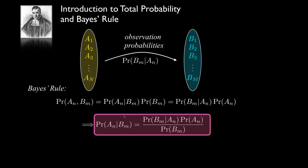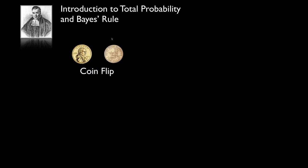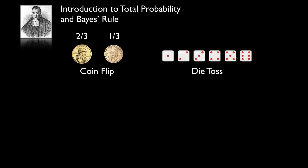Let's look at a simple example illustrating both total probability and Bayes' rule. We have a coin — one side heads, one side tails. This is a special coin: the probability it turns up heads is two-thirds, and the probability it turns up tails is one-third, so we have twice the probability of seeing heads as tails. After flipping this coin, we select a die and toss it. The die has six sides numbered one through six, and the result of this die toss will be our observation.